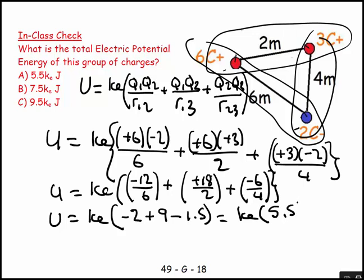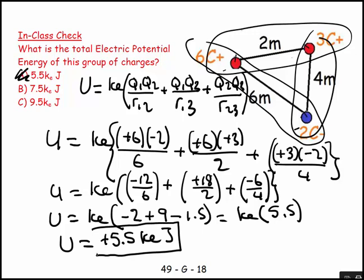Which equals ke times, well, minus two and nine makes seven, seven and minus one point five makes five point five. So this is five point five. So U is equal to plus five point five ke joules, and there's my answer there. So just remember the equation and be careful with your signs and everything's going to be fine, and there we have it.